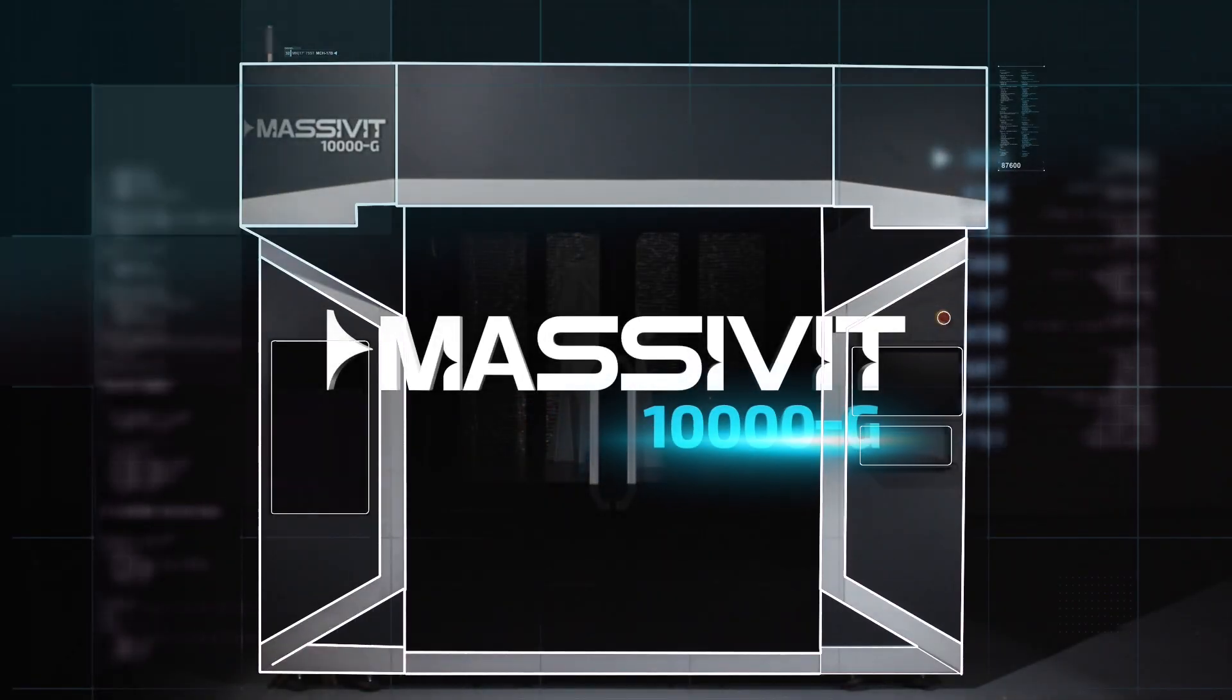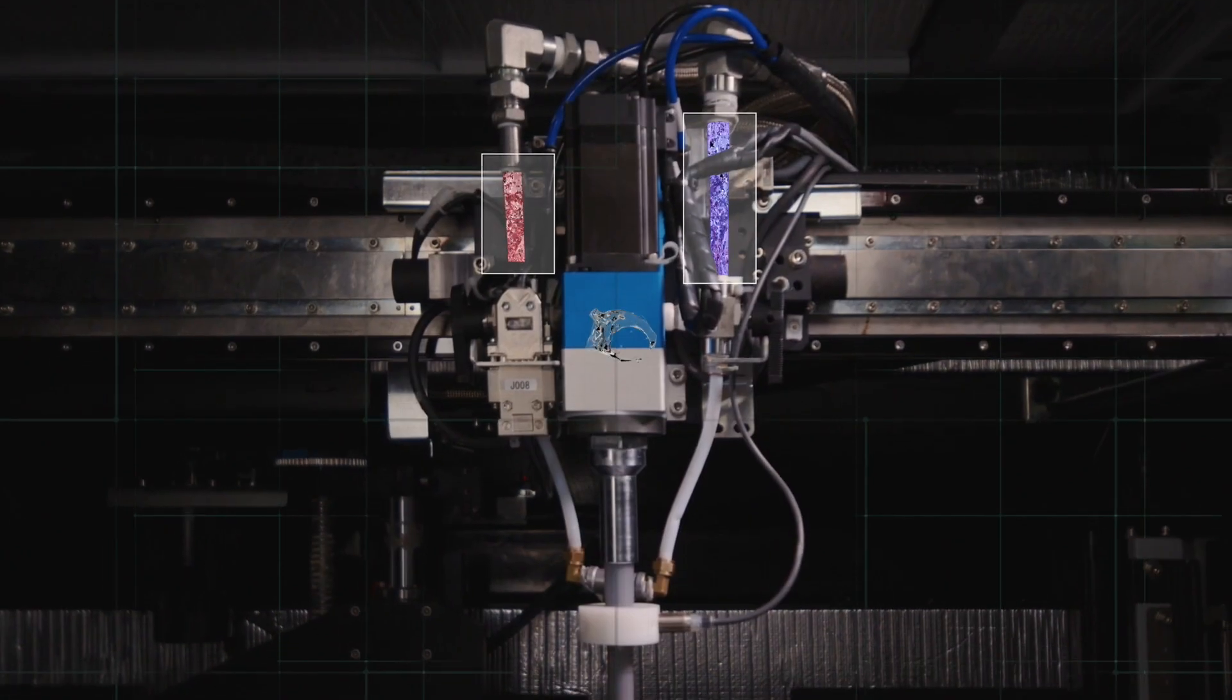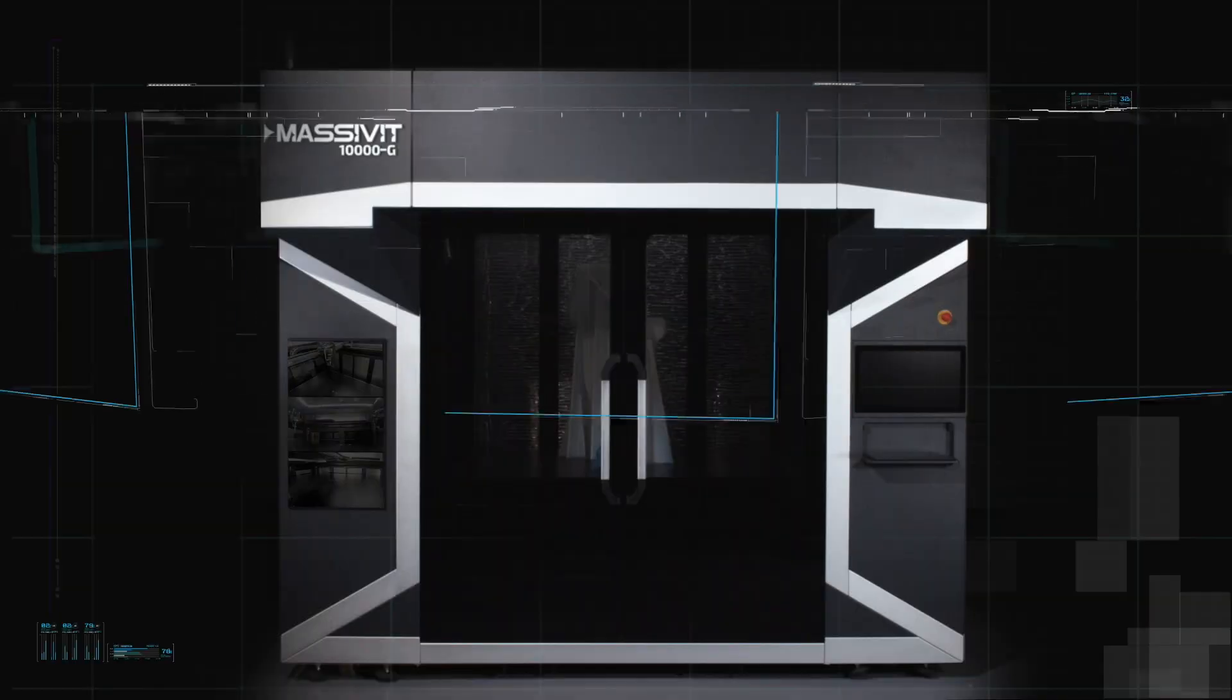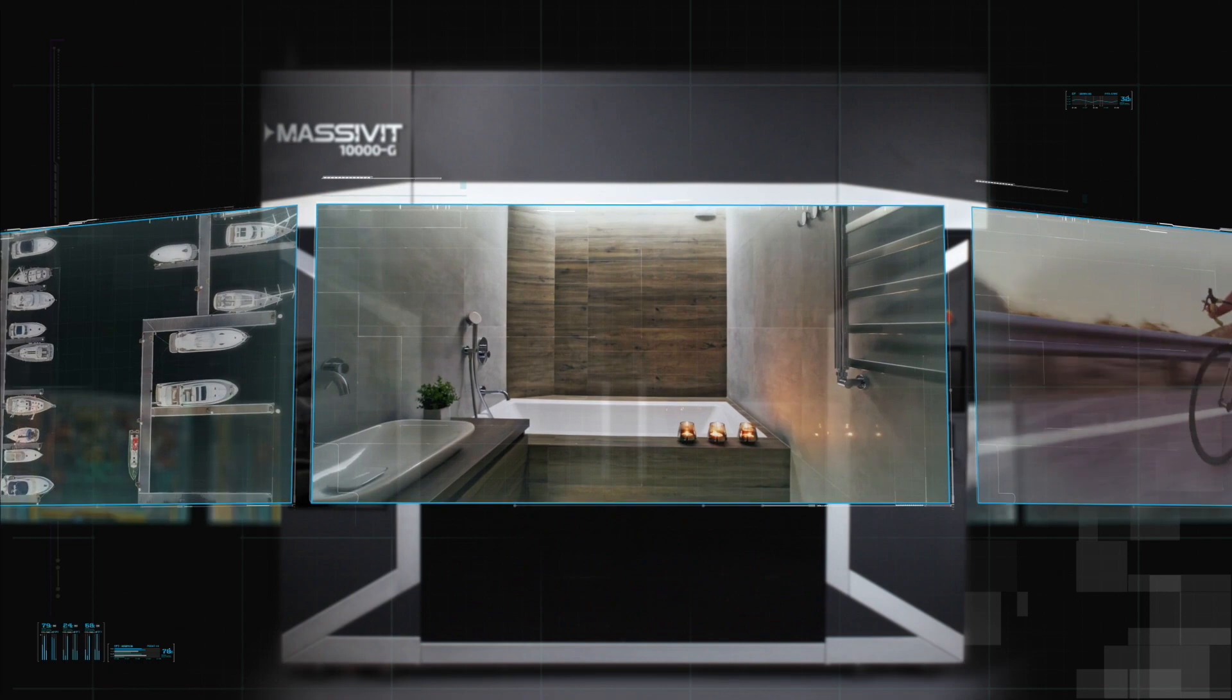Massivit's second-generation technology, cast-in-motion, provides advanced manufacturing and tooling for industries including marine, automotive, entertainment, aviation, sporting goods, and consumer products.